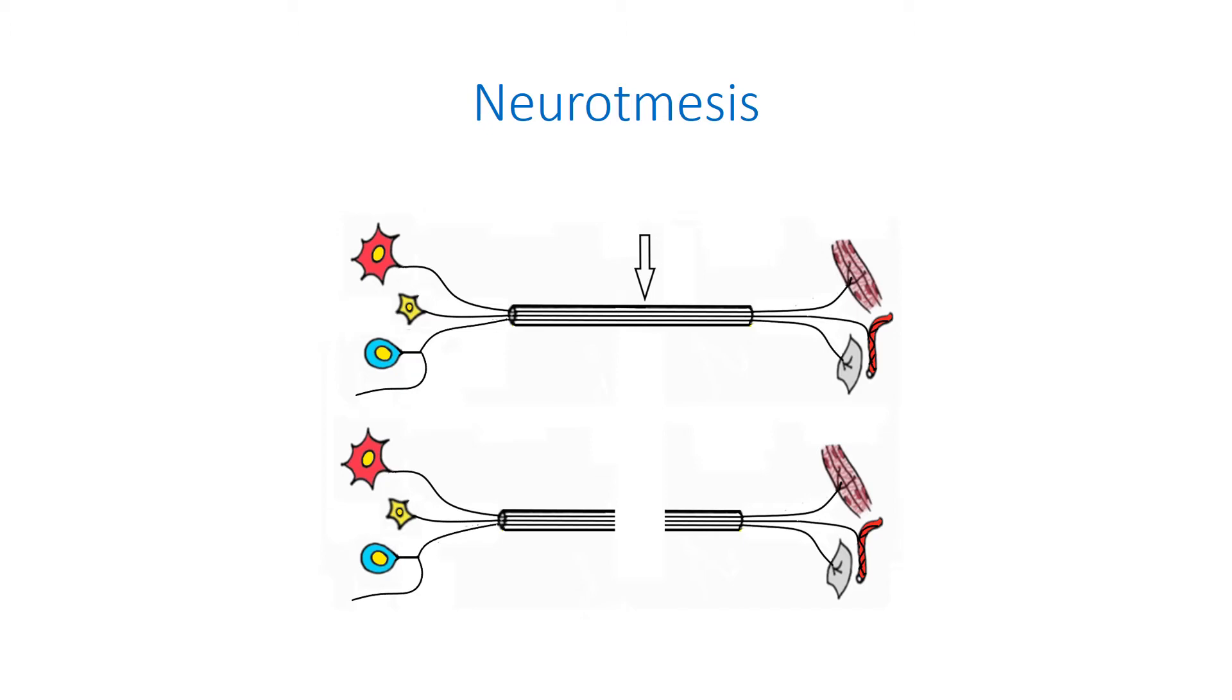The first one will be described later. The second one leads to interruption of nerve fibers and Schwann cell basal lamina, nerve sheaths, and blood vessels. Such injury results in the division of the nerve trunk into the proximal, or central, and the distal, or peripheral, stumps.